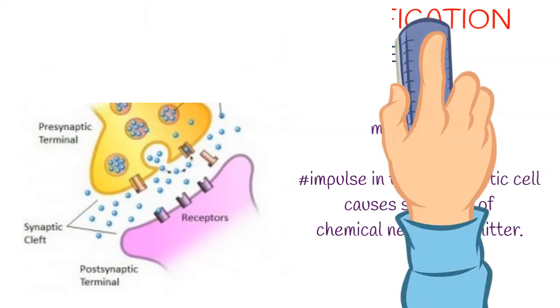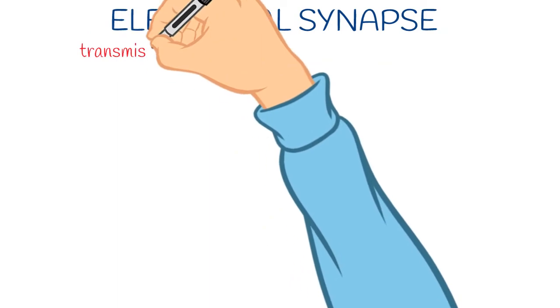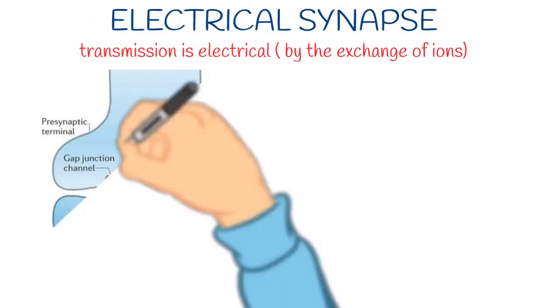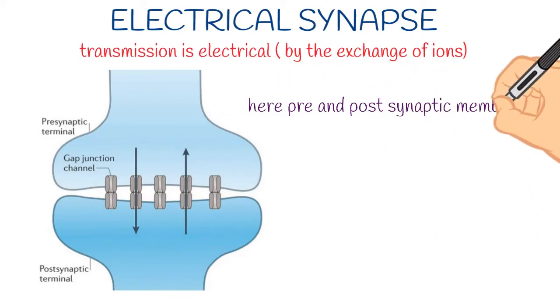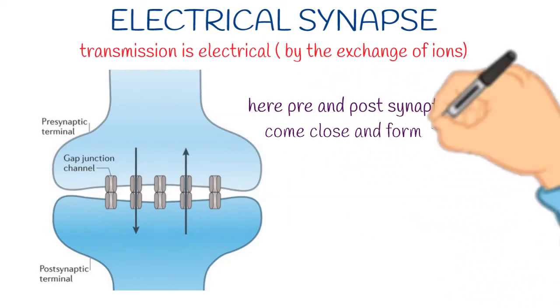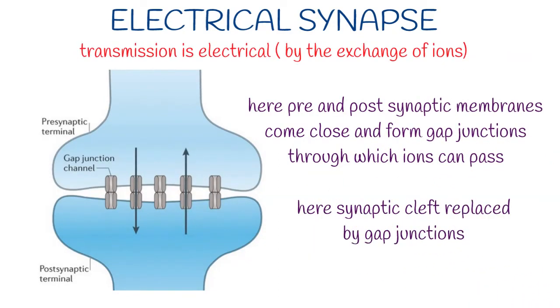Second type under physiological classification is electrical synapse. According to its name, here the transmission is through electrical signals by exchange of ions. What happens here? Pre and post-synaptic membranes come very close to each other and form gap junctions. As you can see it in the diagram, from these junctions ions can pass easily, so here transmission is also very rapid. And here the synaptic cleft is absent as it is replaced by gap junctions.